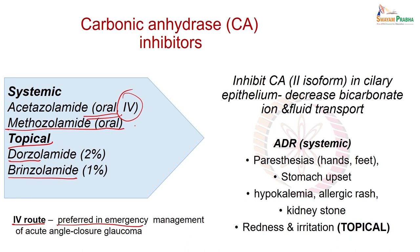How do carbonic anhydrase inhibitors act? Carbonic anhydrase isoform 2 is present in the ciliary body. In the ciliary epithelium, it is carbonic anhydrase isoform 2, and this decreases bicarbonate ion transport and also fluid transport. You will recall that carbonic anhydrase inhibitors are also used to reduce intracranial pressure by the same mechanism.